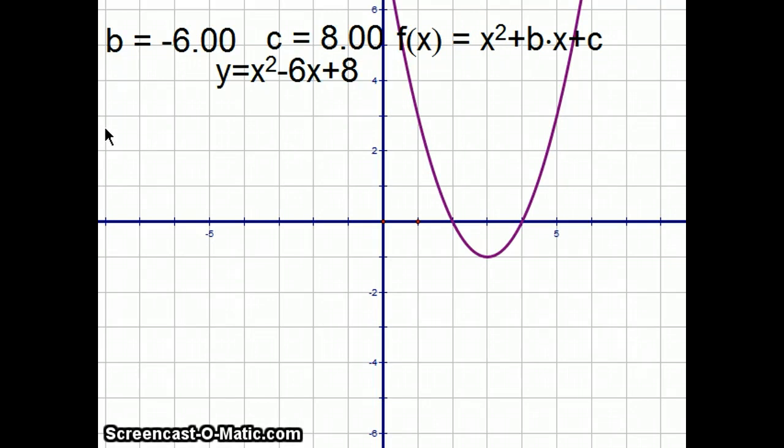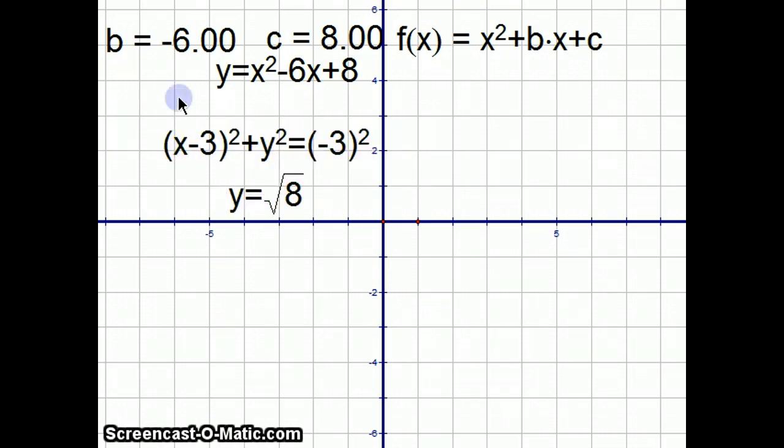But Descartes figured out another way to do these questions, and this one relies on just graphing a certain circle with a certain horizontal line. In this case, you figured out that if you were to graph this circle, the circle with center 3, 0, and that has radius 3, together with the horizontal line, y equals square root of 8.